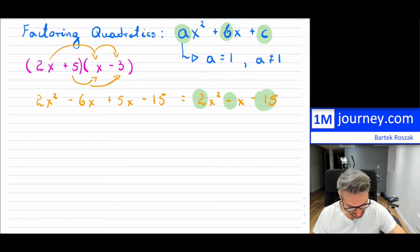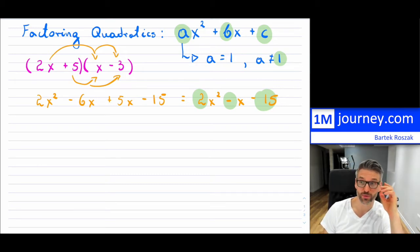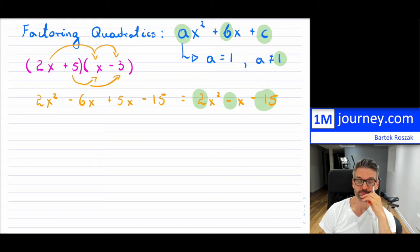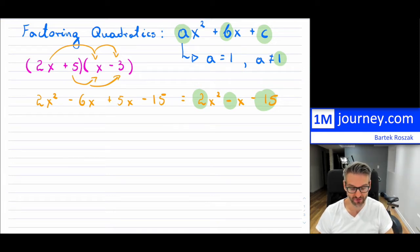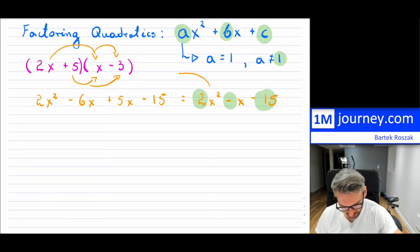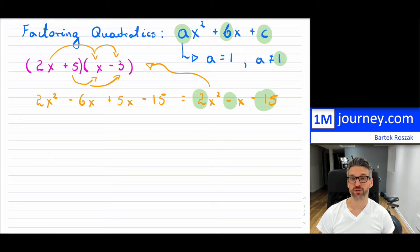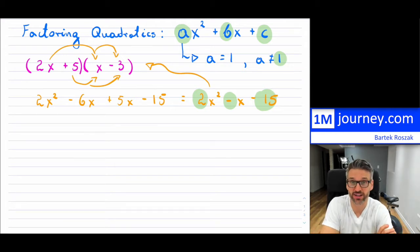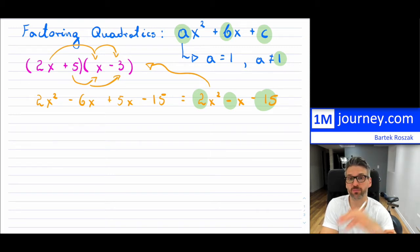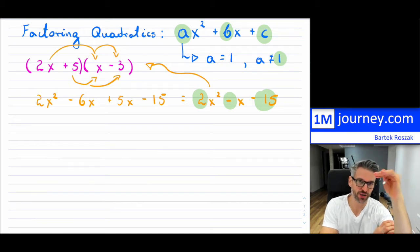The most important part is that A is not equal to 1, which removes the approach from the previous video. If someone gives you 2x² - x - 15 and asks you to factor it, you need to get back to the original factored form. You can do the steps in reverse, but it's not always easy. There's some guessing involved, and for a quiz or test you want a machine-like structure — a clear set of steps to follow.